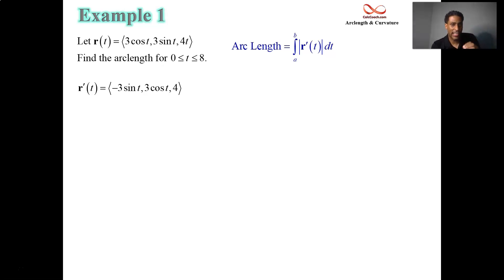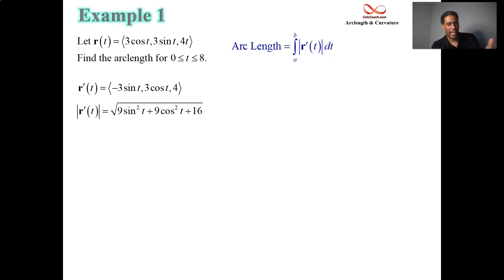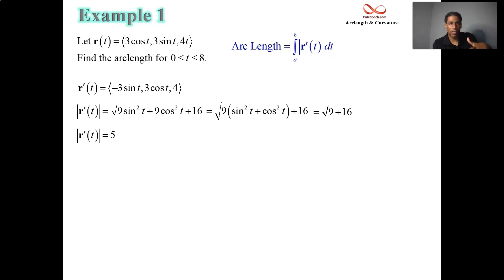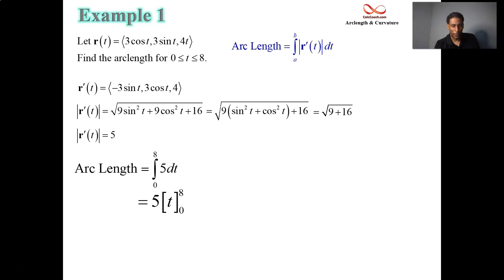Remember, you're integrating the magnitude of the velocity vector, not the velocity vector itself. Square each component: 9 sine squared, 9 cosine squared, 16, and add them up. Notice that sine squared plus cosine squared equals 1, so factoring out the 9 gives 9 times 1, which is just 9. It's really 9 plus 16 under the square root, which is 25 — so the square root is 5. The speed along this curve is 5 at every time t. Integrating 5 from 0 to 8 gives 40.